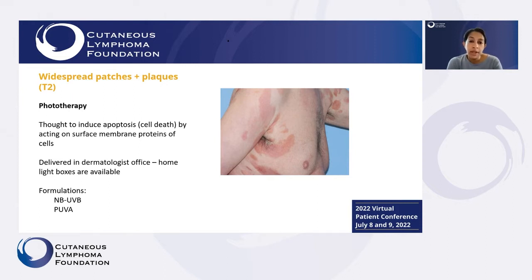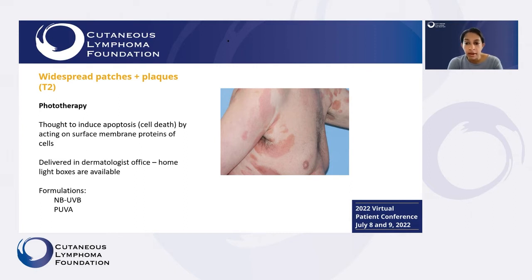Sometimes the lymphoma will involve more than 10% of the body surface area, and so it becomes more difficult to apply creams to all the affected areas. Then we think about introducing something like phototherapy. Phototherapy is thought to induce apoptosis or cell death by acting on the surface membrane proteins of cells. It comes in two formulations: narrow band UVB or PUVA. It's generally given in a dermatologist's office, but home light boxes are available, so if this treatment is working for you, you can look into having a home light box.